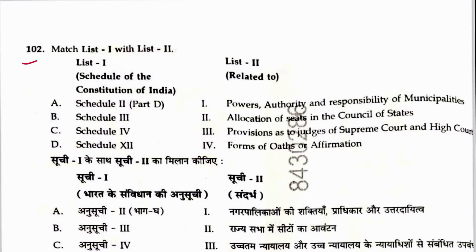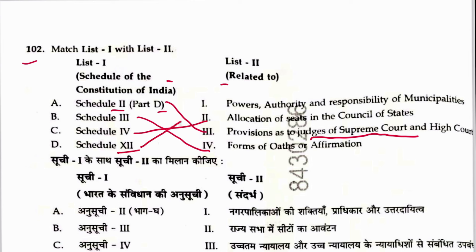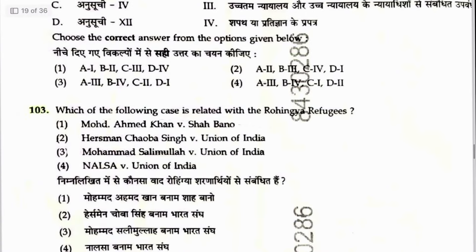Question 102: Match schedules of the Constitution of India. Schedule 2 relates to provisions regarding judges of Supreme Court and High Court. Schedule 3 — oaths and affirmations. Schedule 4 — allocation of seats. Schedule 12 — municipalities. Sequence is 3, 4, 2, 1. Answer is 3.